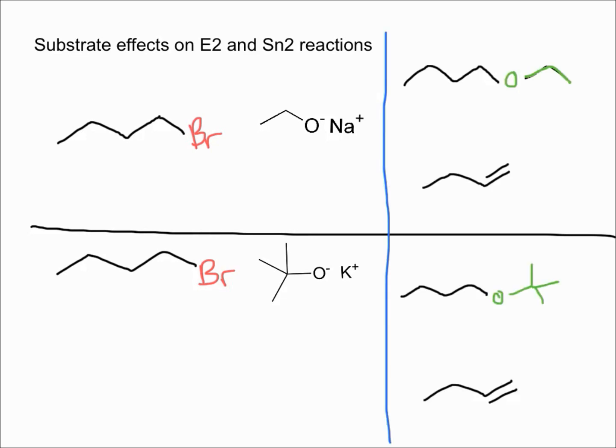To the right of the page, I've drawn the two reactions that will occur. One of them would occur if the molecule underwent an SN2 reaction, and the other one would occur if the molecule underwent an E2 reaction.